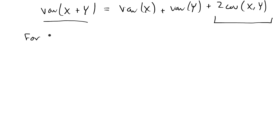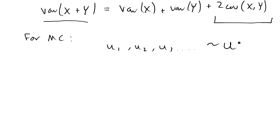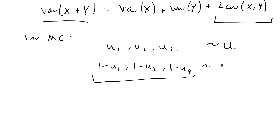For Monte Carlo sampling, the definition of an antithetic variate is: for every pair of observations, the two observations should come from the same distribution but have negative covariance. For example, if we sample u1, u2, u3, etc. from the uniform distribution, the antithetic variate would be 1 minus u1, 1 minus u2, 1 minus u3, etc. This sample is also uniformly distributed and has negative covariance with each original observation.